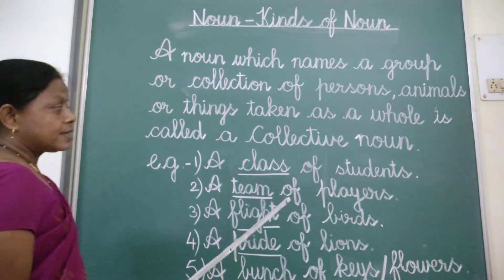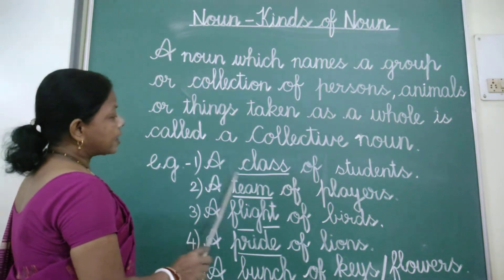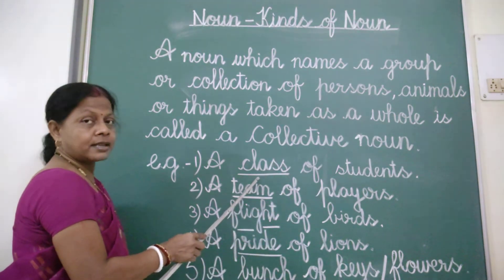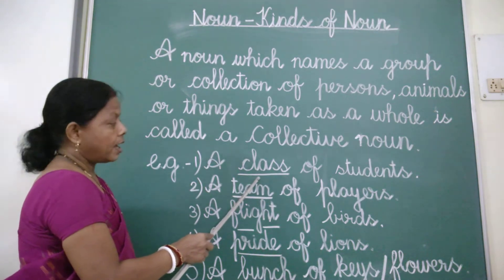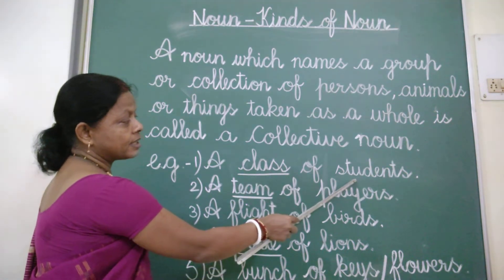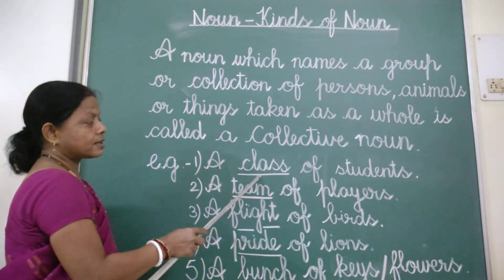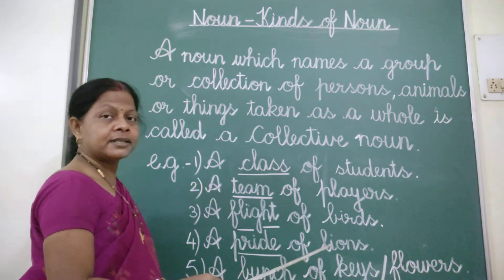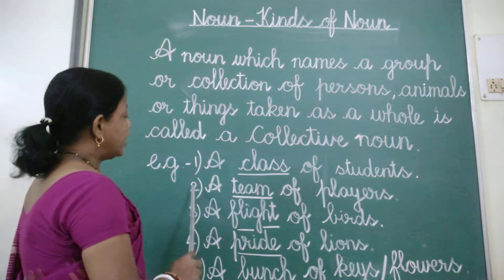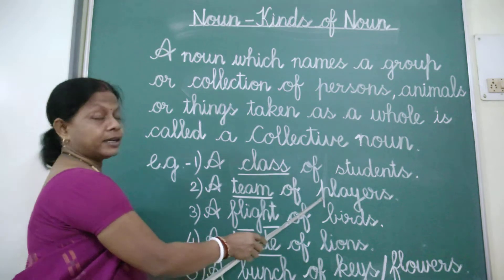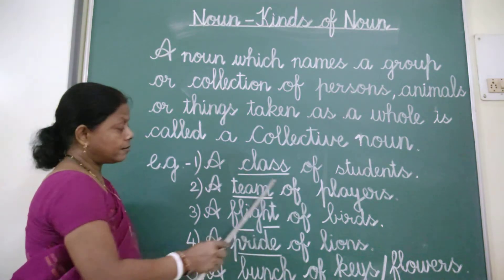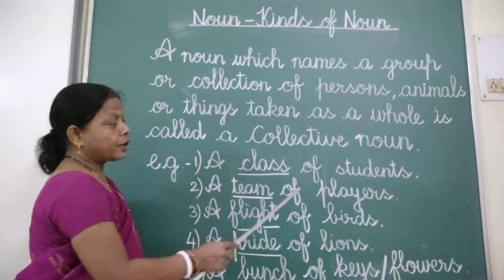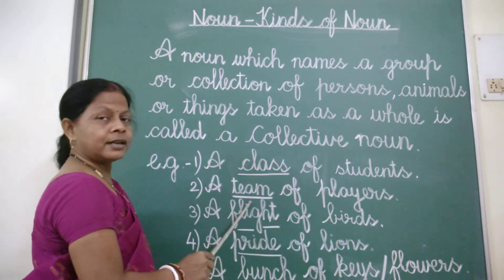Let us see the examples. A class of students — here 'class' is a collective noun. A group of students is known as a class; it is a collection of students taken as one. A team of players — here again the word 'team' is a collective noun, and a group of players is known as a team.